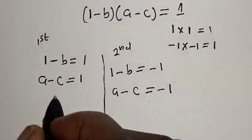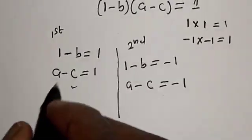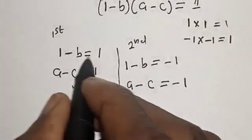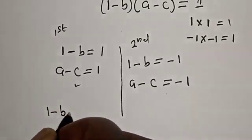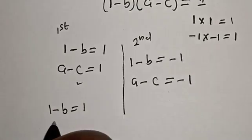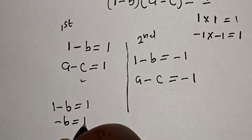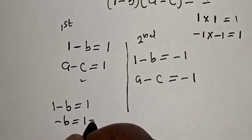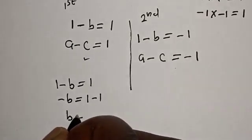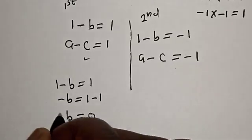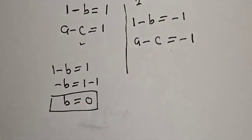Let's solve the first case. From 1 minus B is equal to 1, we get B is equal to 1 minus 1. Therefore B is equal to 0. We've gotten the value of B, which is equal to 0.